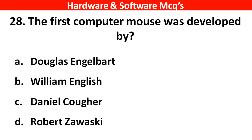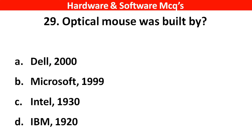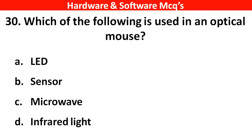Next question: The first computer mouse was developed by ___. The right answer is option A — Douglas Engelbart. Next question: The optical mouse was built by ___. The right answer is option B — Microsoft in 1999. Next question: Which of the following is used in an optical mouse? The right answer is option A — LED.